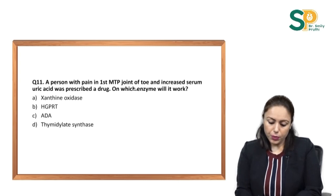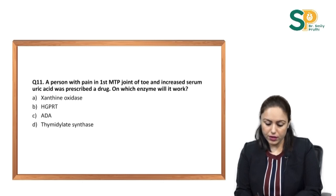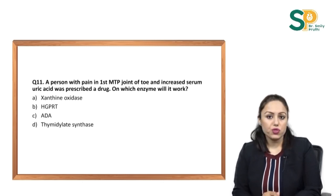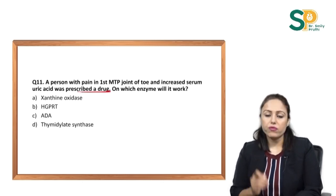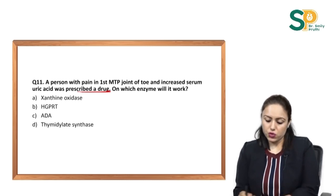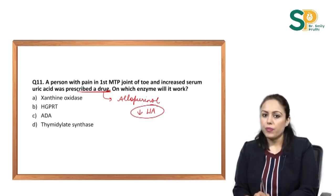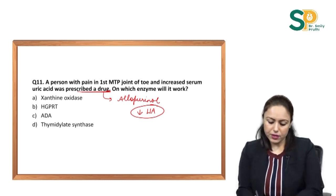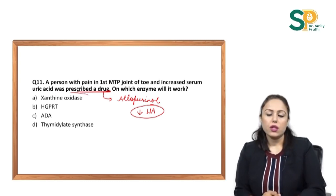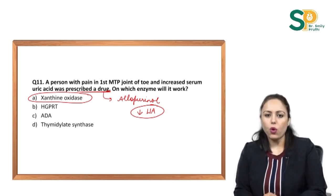Question number 11: a patient with pain in the first MTP joint of the toe and increased serum uric acid — a drug is prescribed; on which enzyme will it work? The drug is allopurinol, used to decrease uric acid levels. The enzyme that forms uric acid is xanthine oxidase, so the answer is xanthine oxidase.